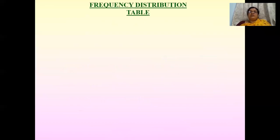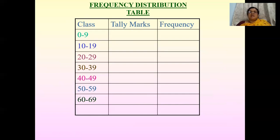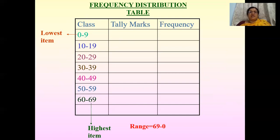Now we will prepare the frequency distribution table. Before preparing it, let us revisit some terms from the previous slide. The lowest term is 0 and the highest item is 69. The range is maximum minus minimum, that is 69 minus 0, so the range is 69.